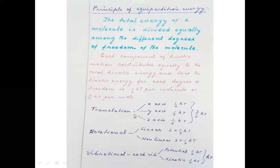Translational motion is the motion of the entire molecule. Along the x direction: ½kT — this is one mode. Along the y direction: ½kT — this is another mode. Along the z direction: ½kT — that is another mode. So totally, 3/2 kT is the contribution of translational motion to the total energy of the system.